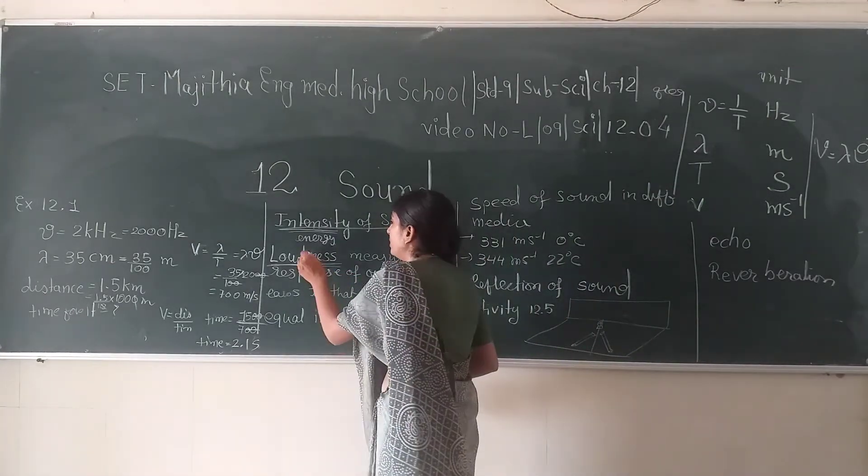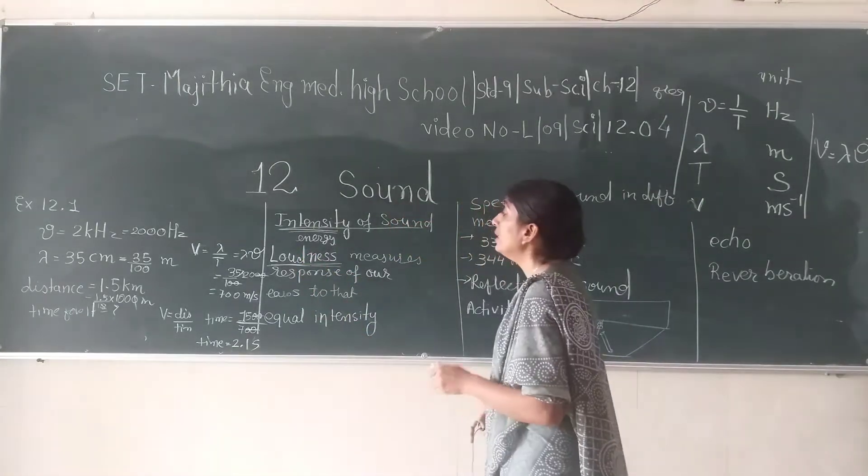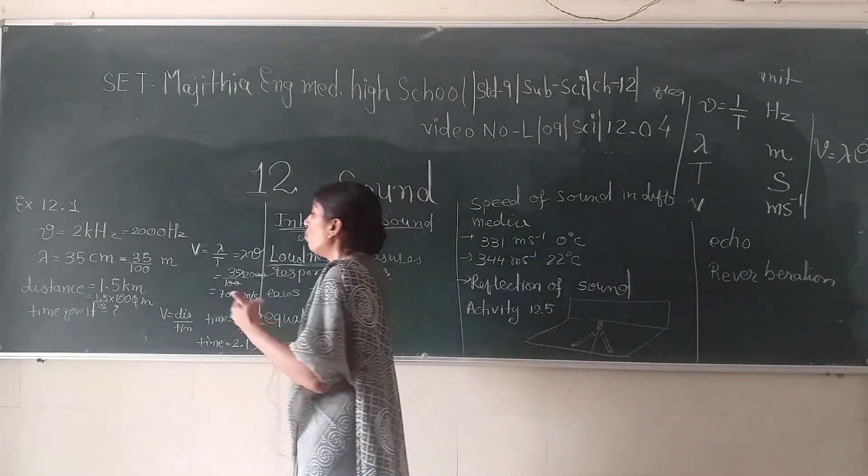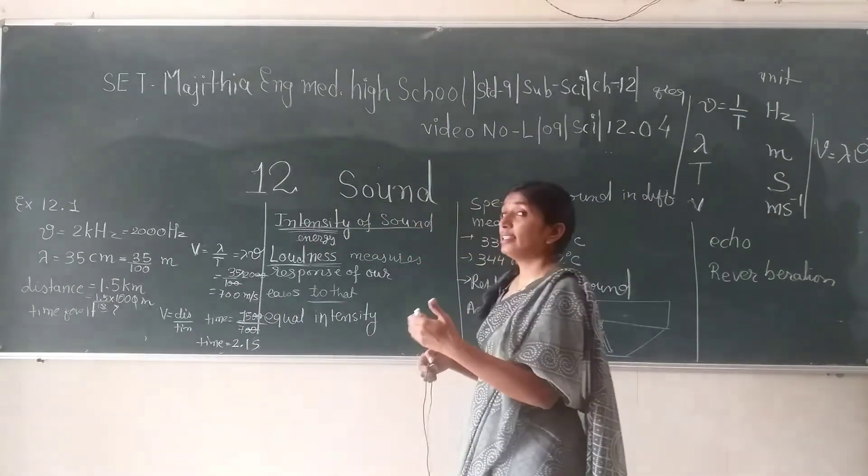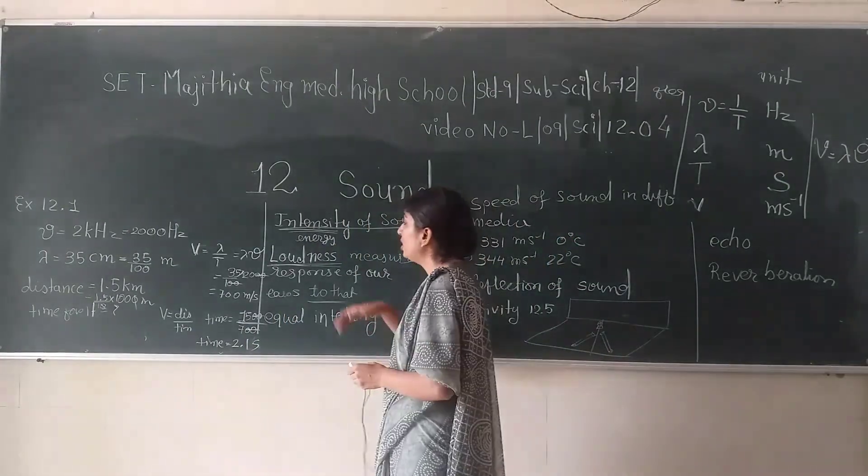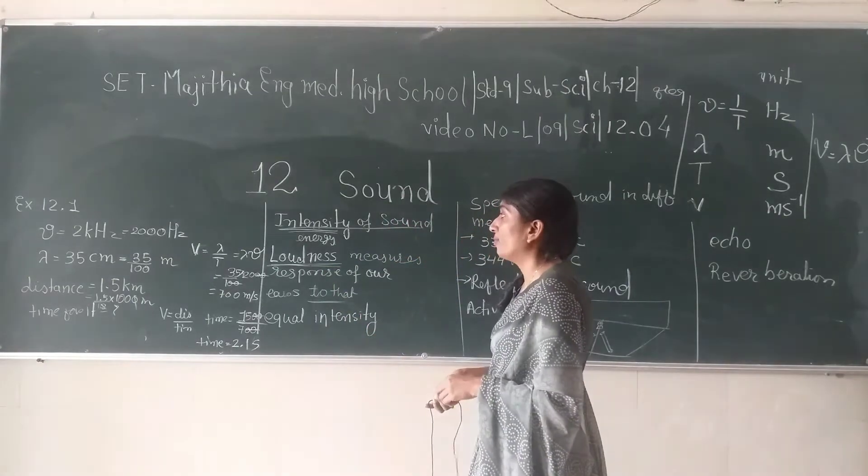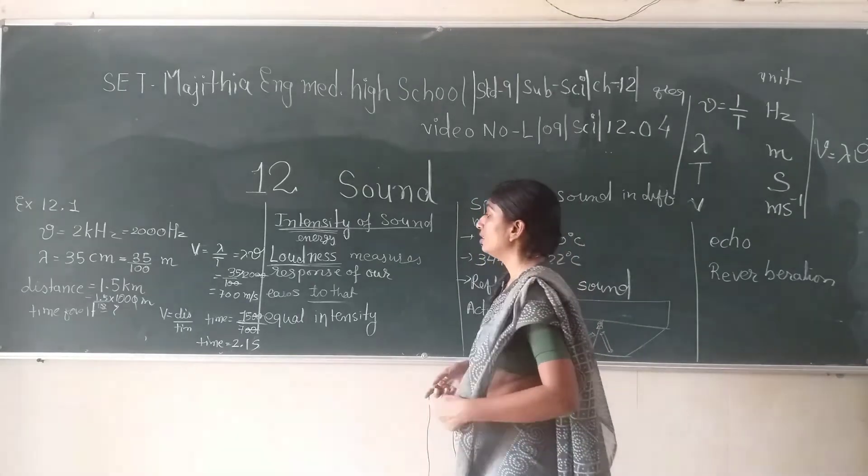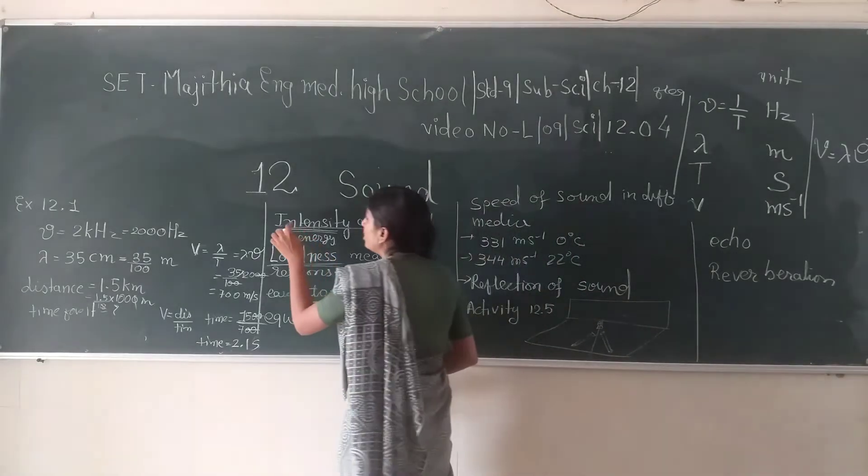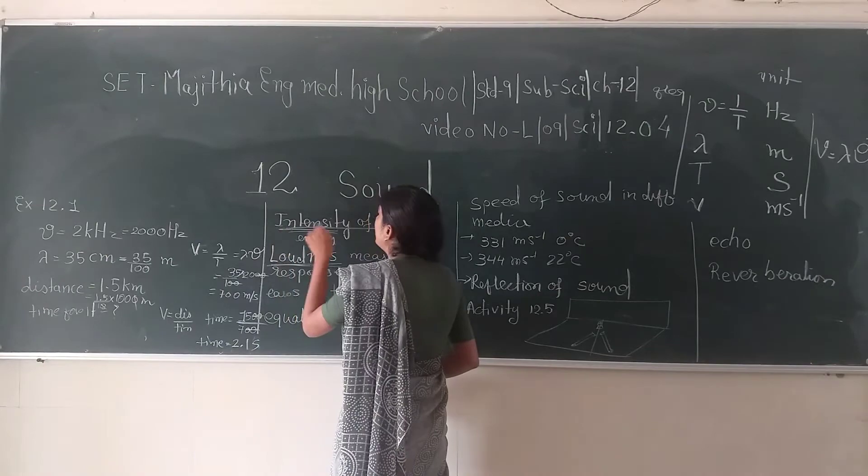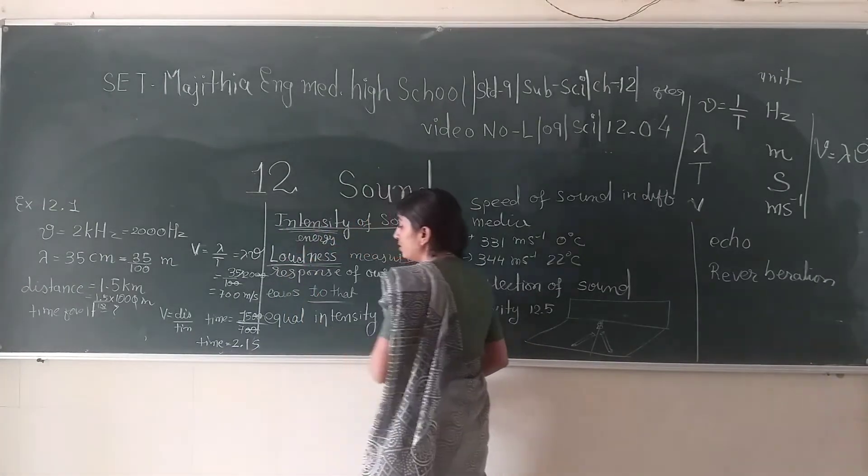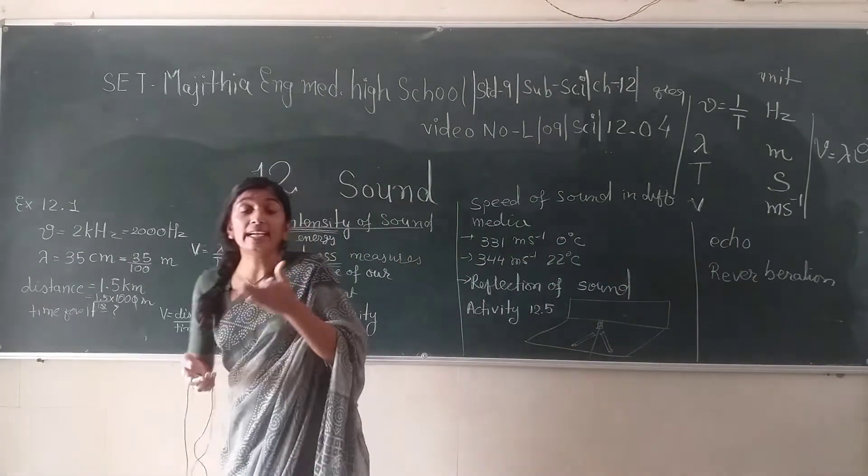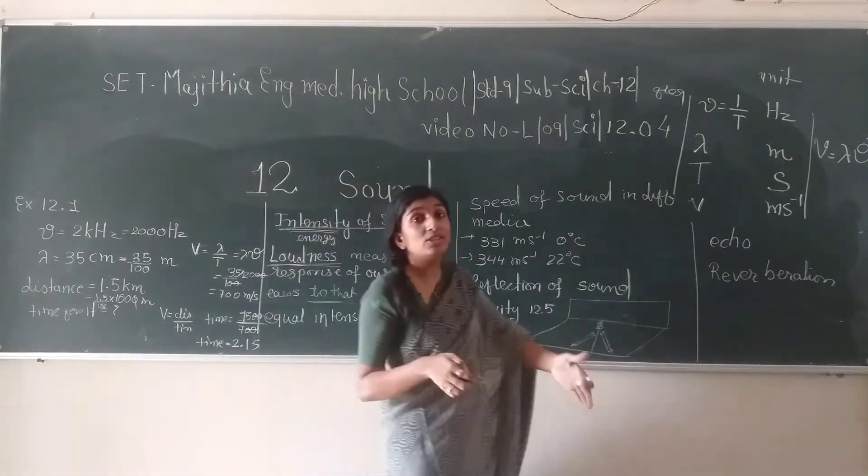We sometimes mistakenly or unconsciously say loudness and intensity are same, but loudness is different. Loudness is a measure of our ear's response towards that sound. If it is strong we will say the sound is loud, and if it is less then we will say it is soft. But intensity is the amount of energy passing through unit area, so we should not confuse between intensity of sound and the loudness of a sound.